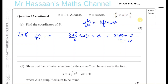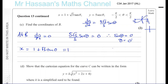Between minus pi over 2 and pi over 2, sine theta equals 0 only at theta equals 0. So the x-coordinate is 1 plus root 3 times tan 0, and since tan 0 equals 0, x equals 1. The y-coordinate is 5 sec 0, which equals 5 over cosine 0, and cosine 0 is 1, so y equals 5.